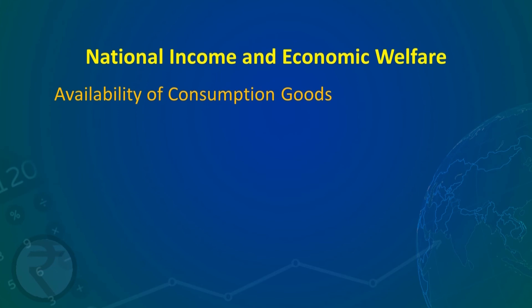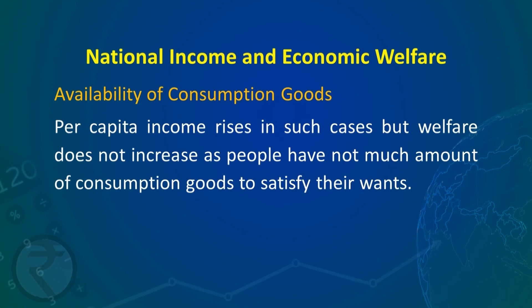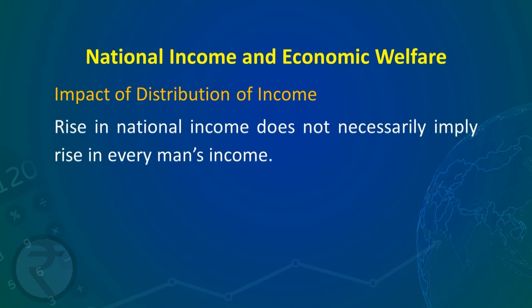Third, availability of consumer goods: if national income rises but the proportion of consumption goods does not rise and there is increase in production of capital goods or war equipment, this will not increase economic welfare because people will not have consumption goods to satisfy their wants. Fourth, distribution of income: rise in national income does not necessarily mean rise in every person's income. This may have created more gap between the rich and the poor — if the increase in national income goes only to rich people, it does not increase welfare for all.